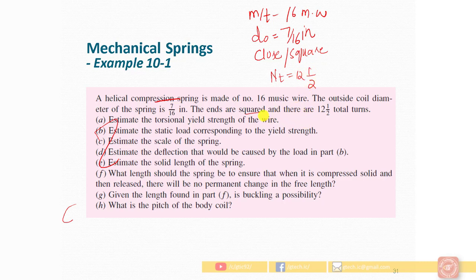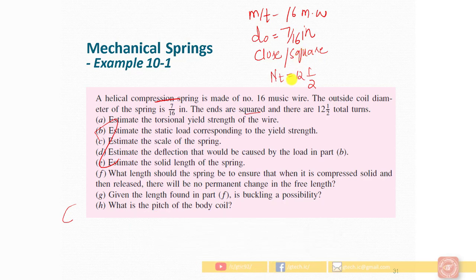Since we have square and closed ends, end coils will be present and the active number of coils will be different from the total number of coils. We need to estimate: (A) torsional yield strength of the wire, (B) static load corresponding to yield strength, (C) spring scale (k value), and (D) solid length of the spring.